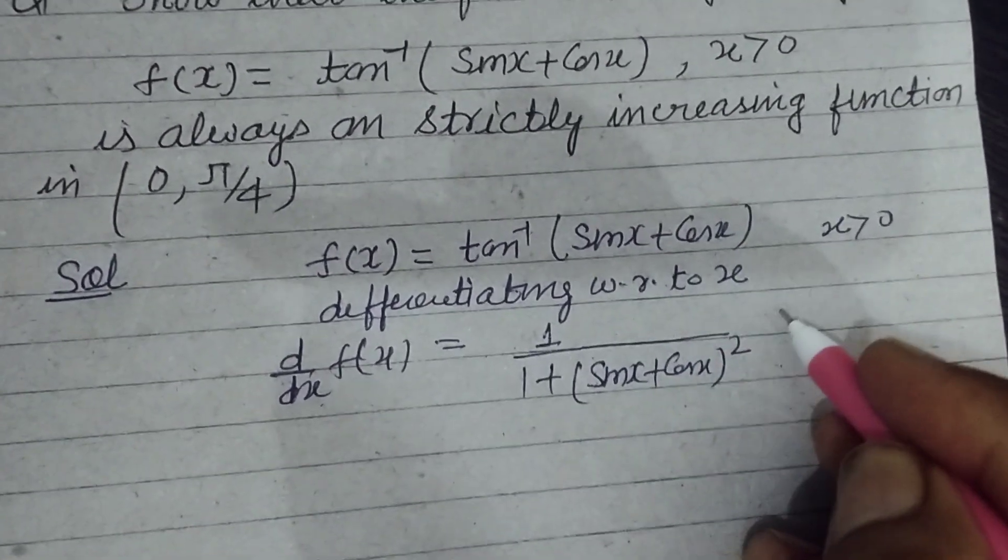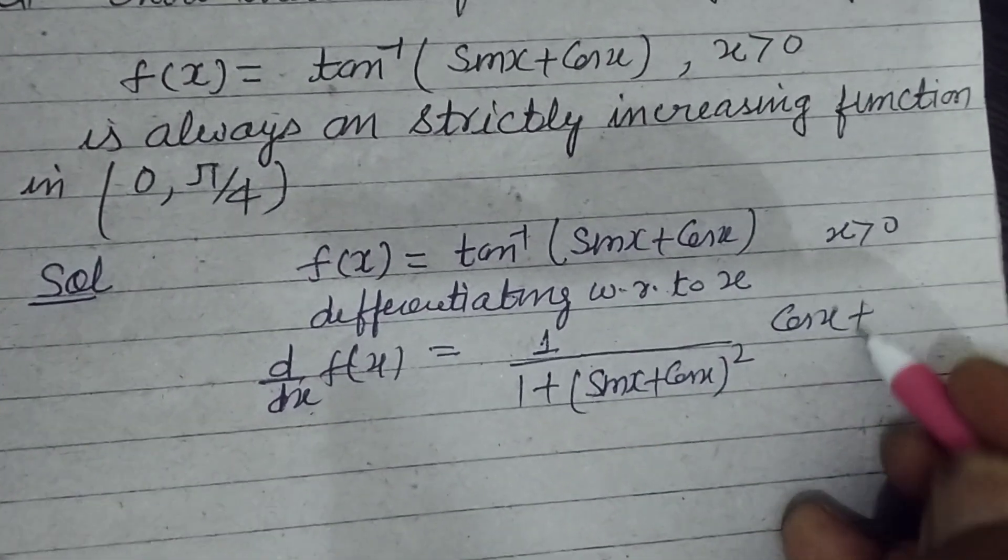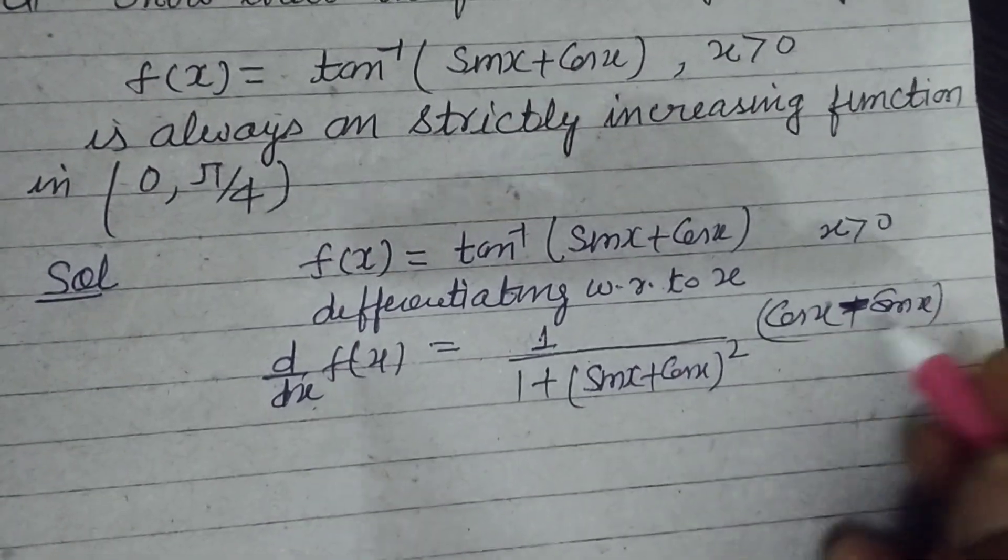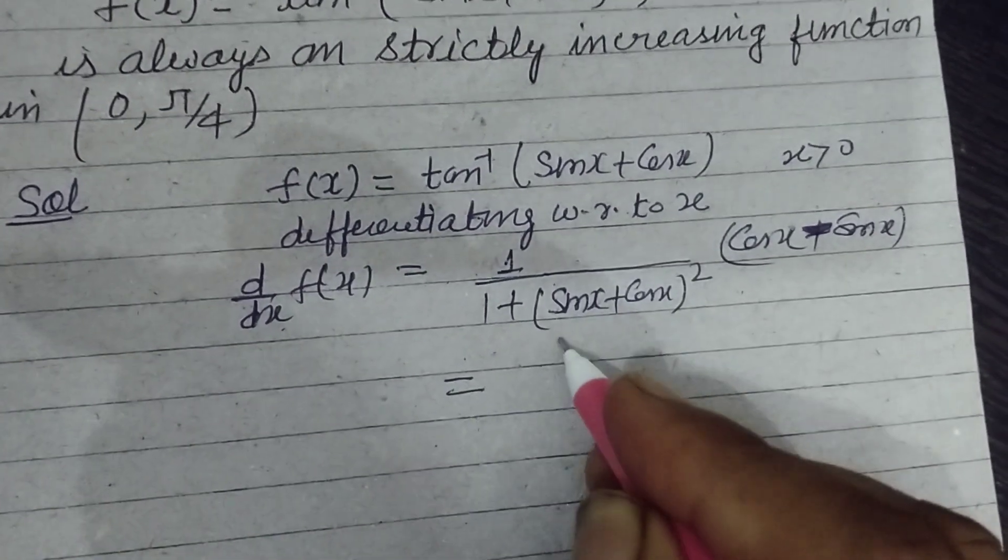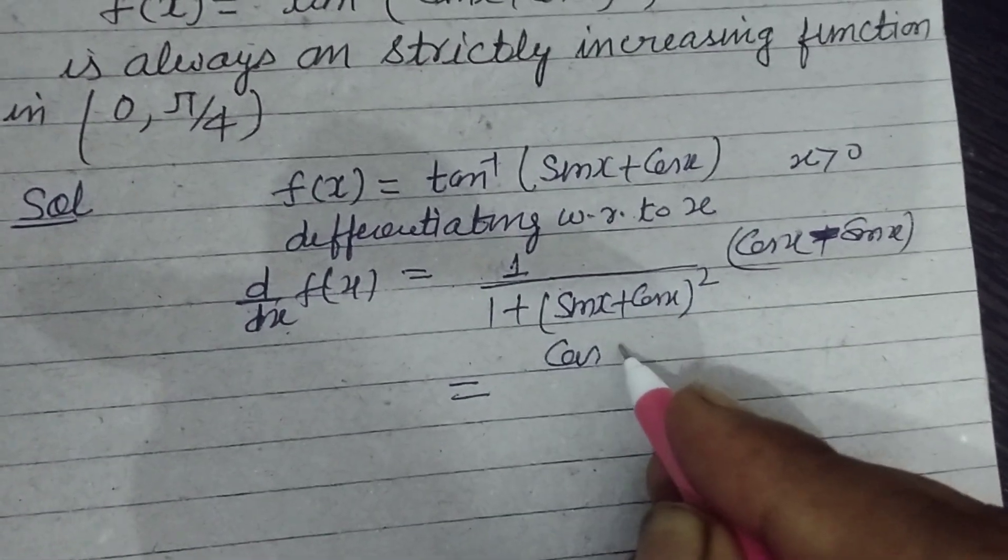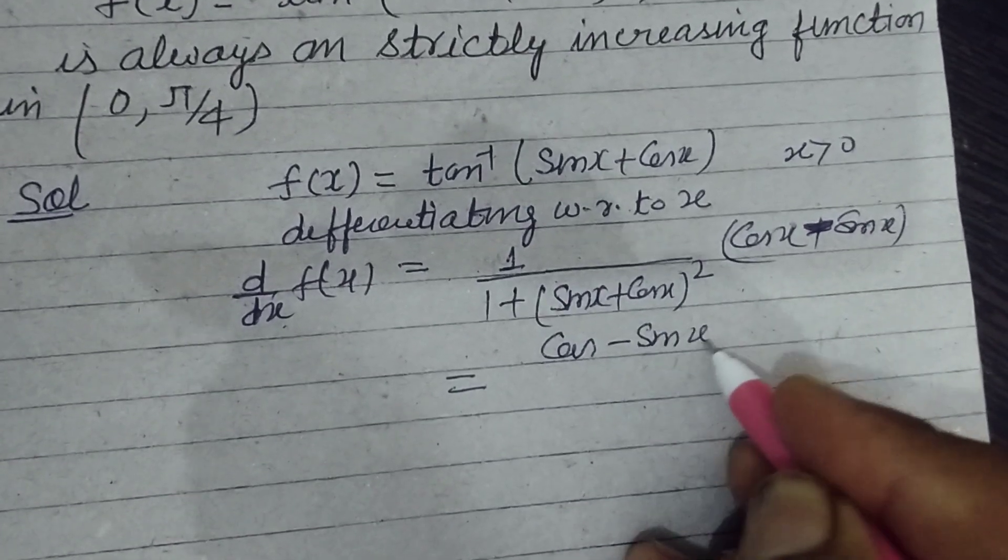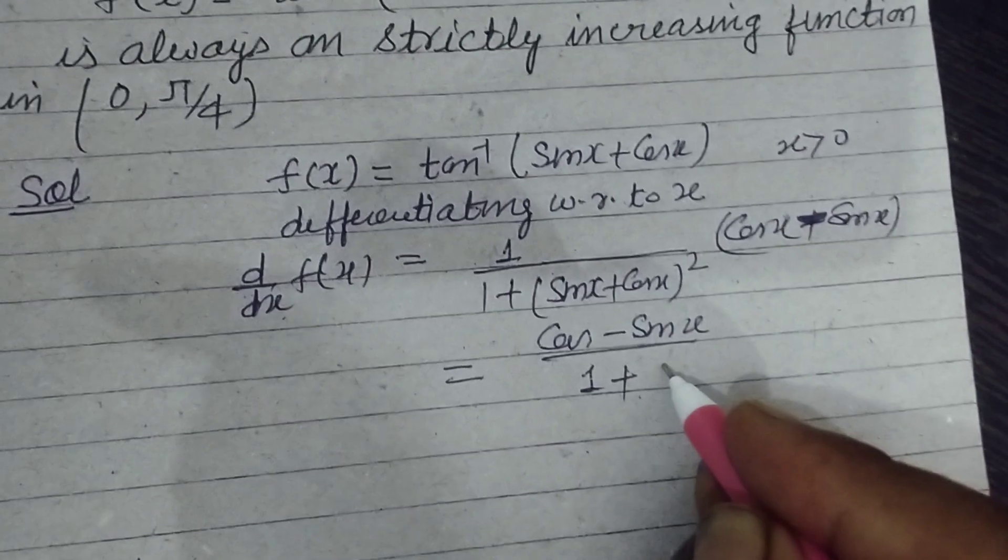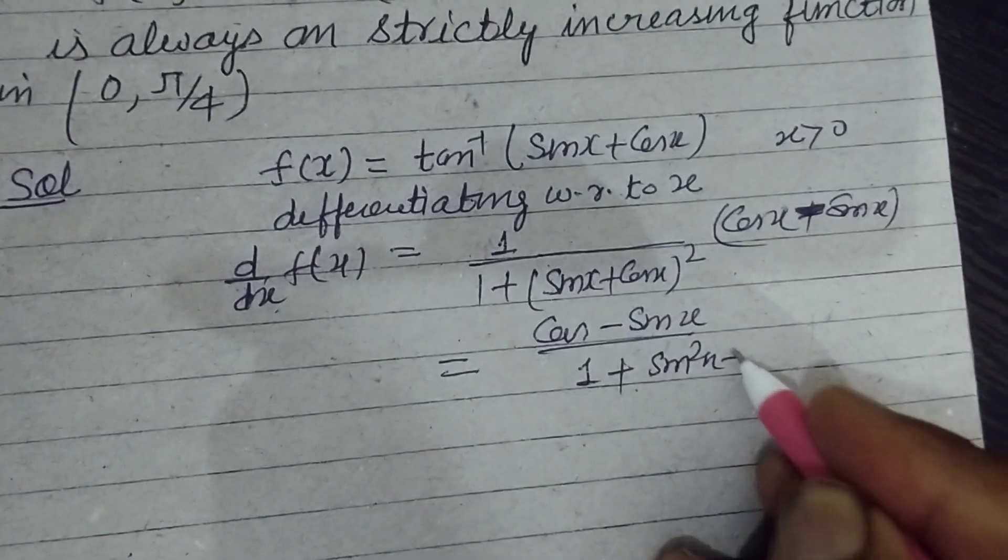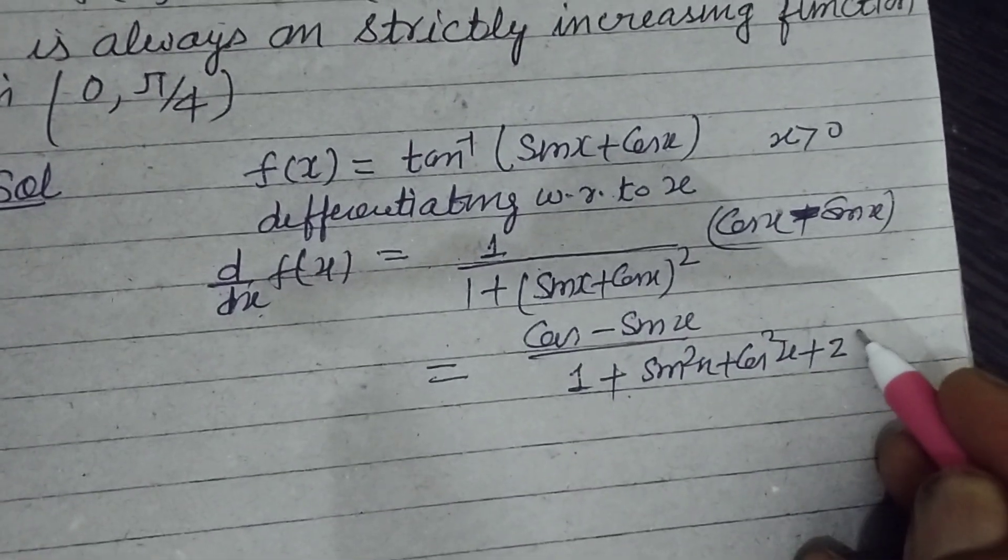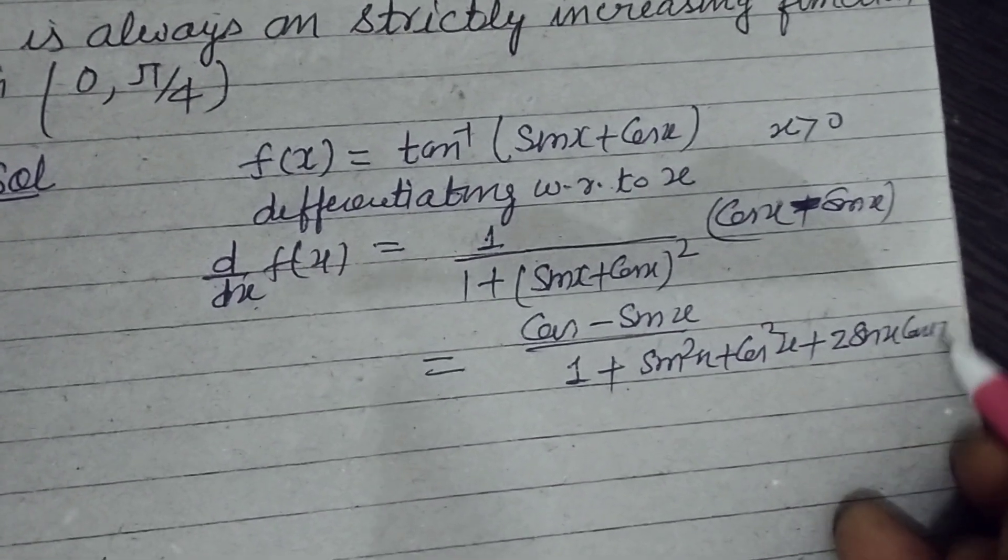Now differentiation of sin x is cos x and cos x is minus sin x. So we get the differentiation of tan inverse (sin x + cos x) which is (cos x - sin x)/(1 + sin²x + cos²x + 2sin x cos x).